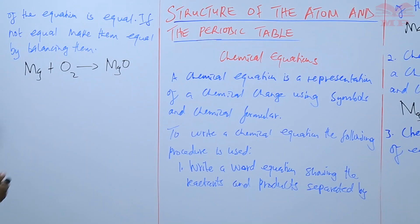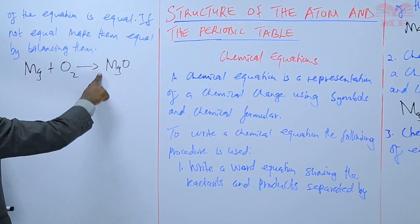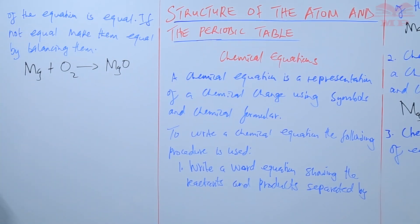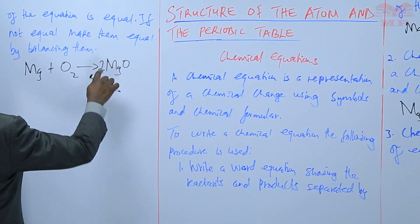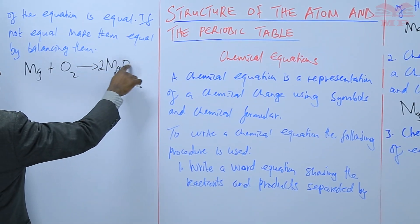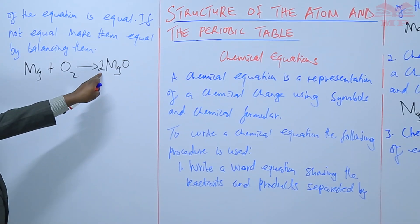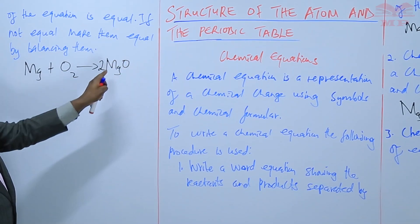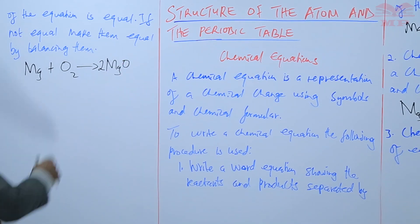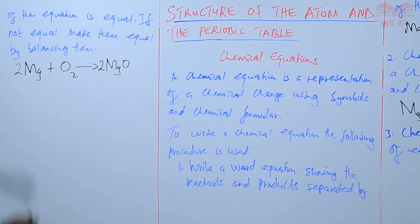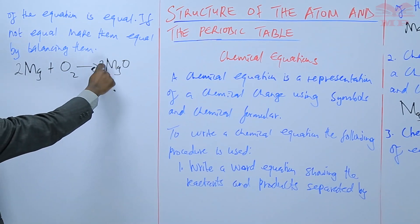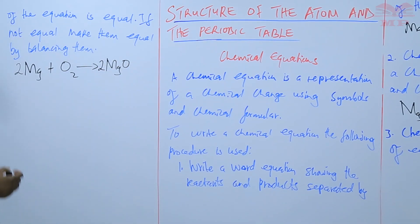So we balance by putting a number in front of the formula or symbol. Here we will put a 2 in front of magnesium oxide. When this 2 is here, it multiplies the whole formula. So now we have 2 magnesium and 2 oxygen. But now magnesium is only one on this side, so we also multiply there by 2. So 2 magnesium, 2 oxygen. 2 magnesium, 2 oxygen. That equation is balanced.